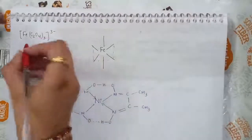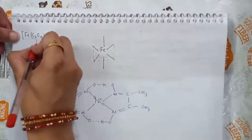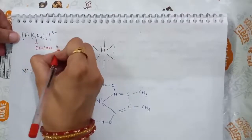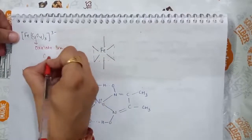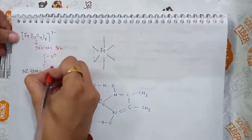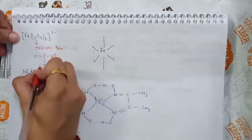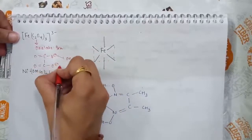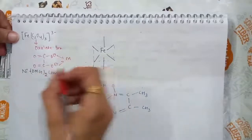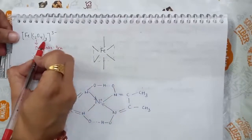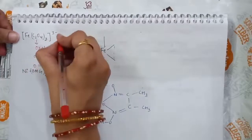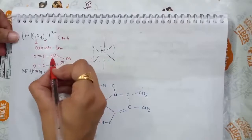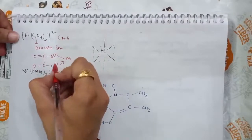Another example is FeC2O4 with 3 oxalate ligands. The oxalate ion coordinates with the metal through oxygen atoms — there are two oxygen atoms providing two points of attachment. With three bidentate ligands, the coordination number is 6, because one C2O4 unit has two points of attachment and two times three is six.